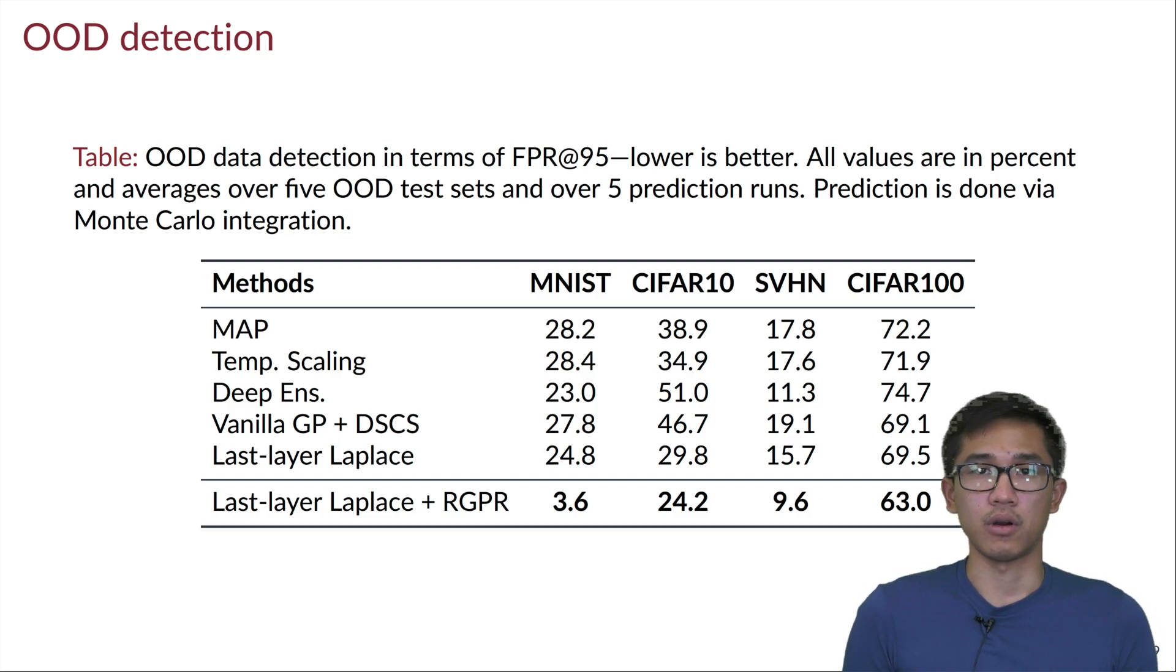Here we show results for out-of-distribution detection where we show that RGPR improves the baseline Bayesian ReLU network by quite a bit of margin.